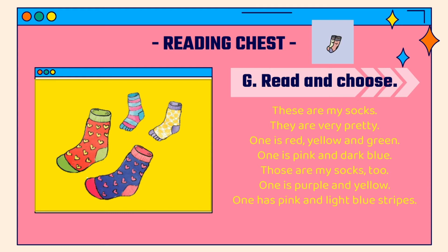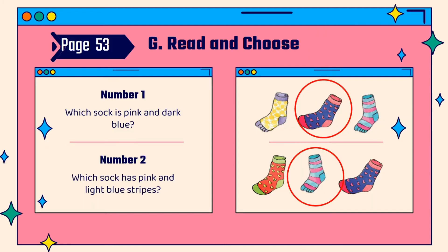Reading: 'These are my socks. They are very pretty. One is red, yellow, and green. One is pink and dark blue. Those are my socks too. One is purple and yellow. One has pink and light blue stripes.' Now let's read and choose on page 53. Number one: which sock is pink and dark blue? Number two: which sock has pink and light blue stripes?